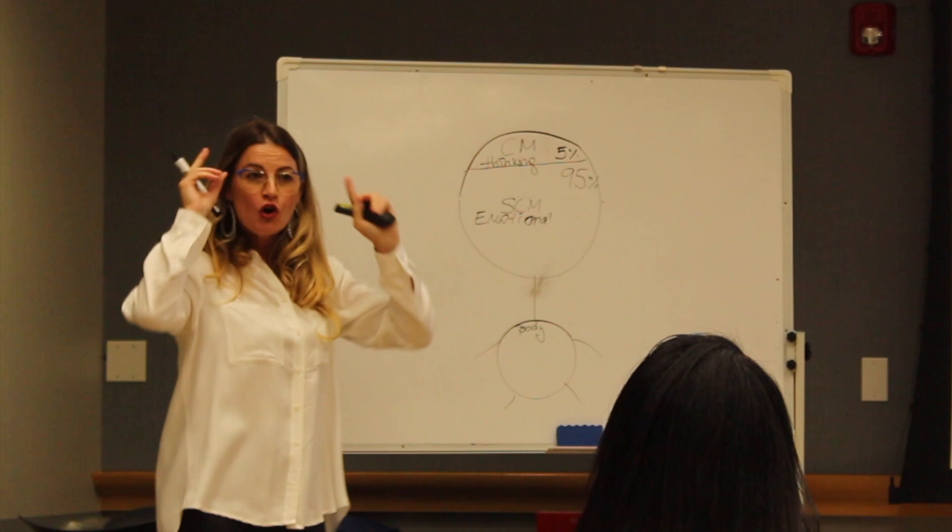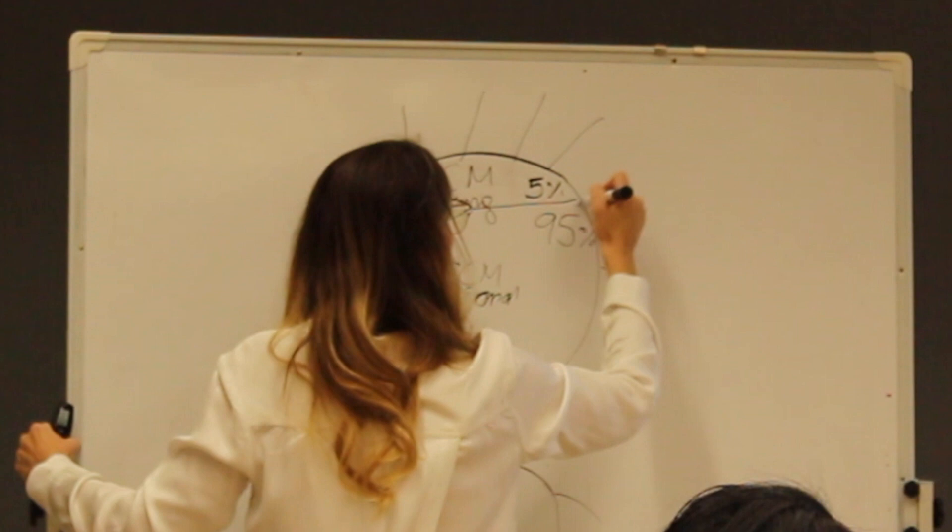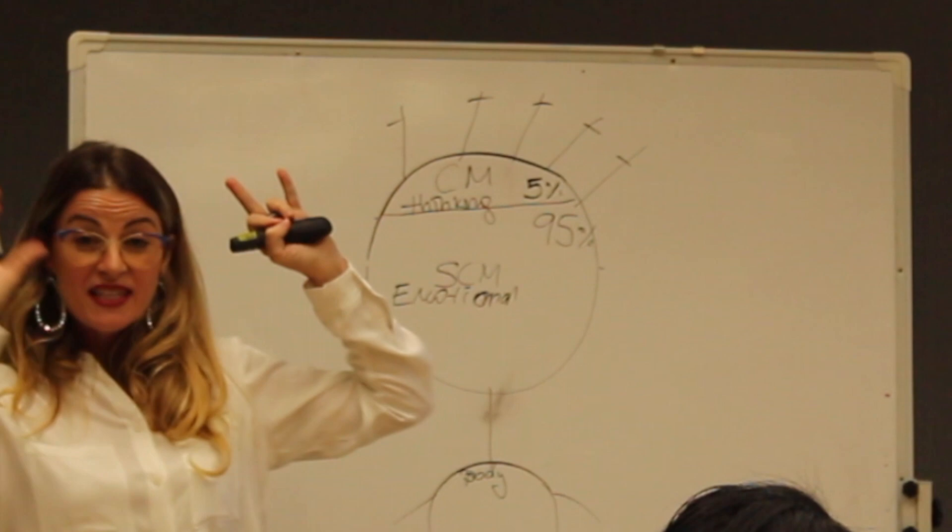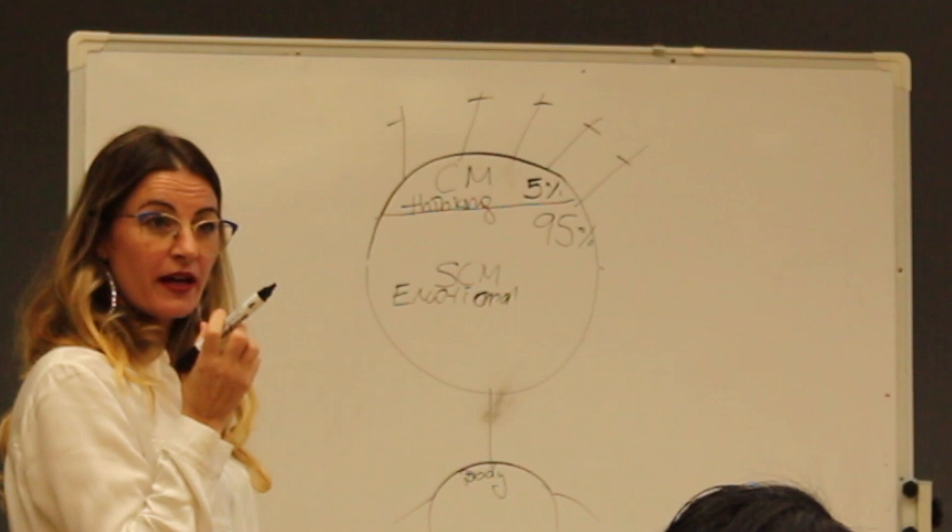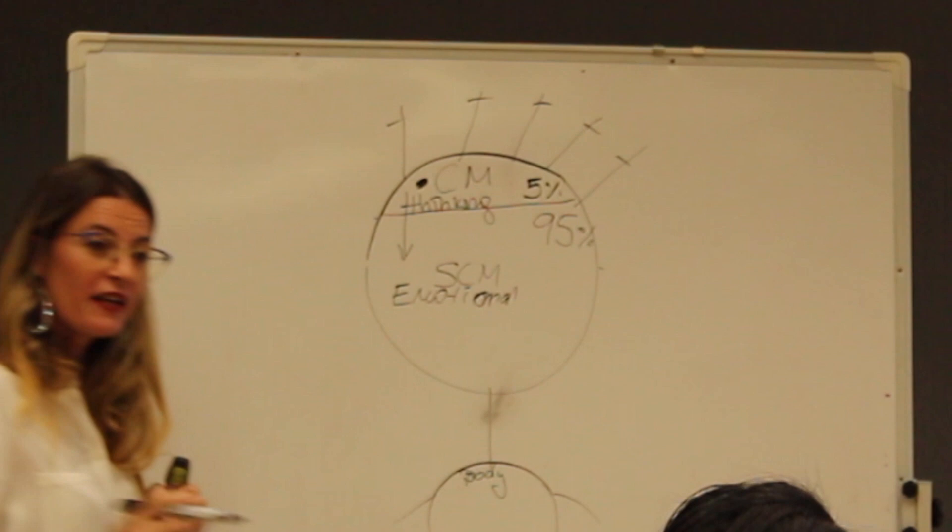So he said we are thinking with a conscious mind with the help of our sensory factors, and then he drew five antennas here because that's how many sensory factors we have: hearing, taste, touch, see, and smell. Based on what we see, we hear, we receive information. We create thoughts.